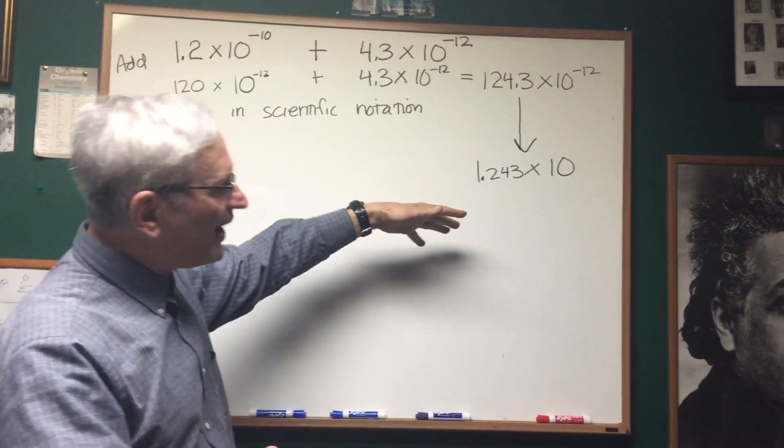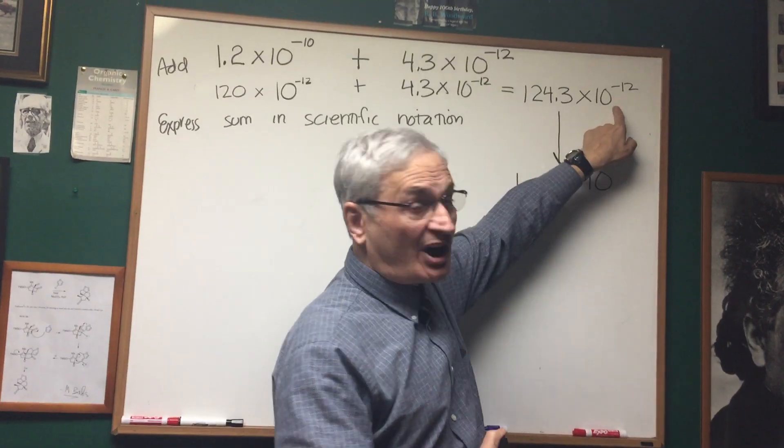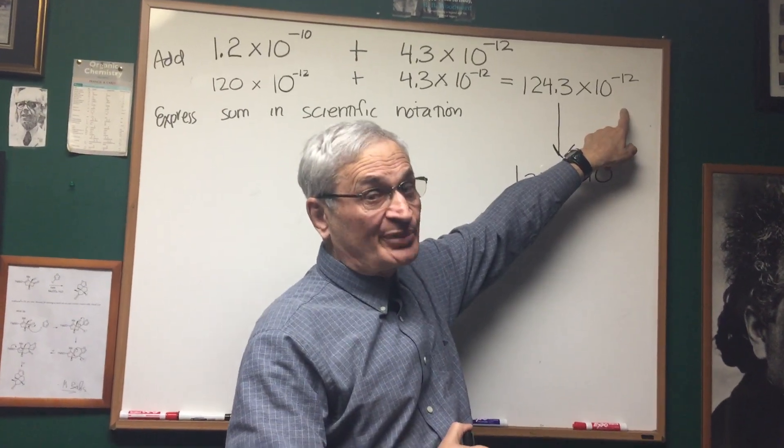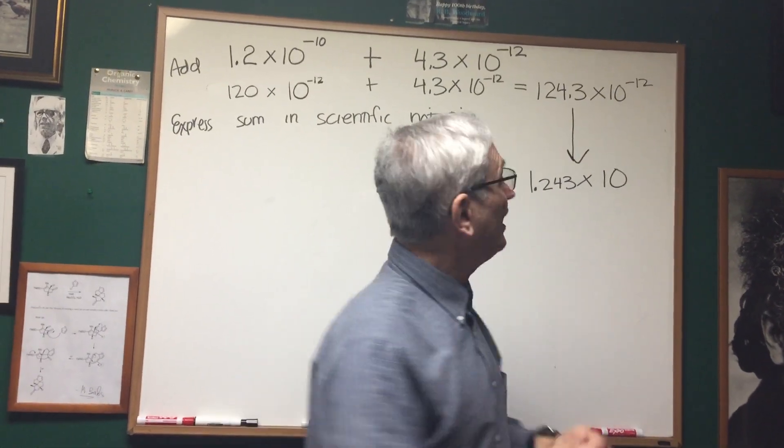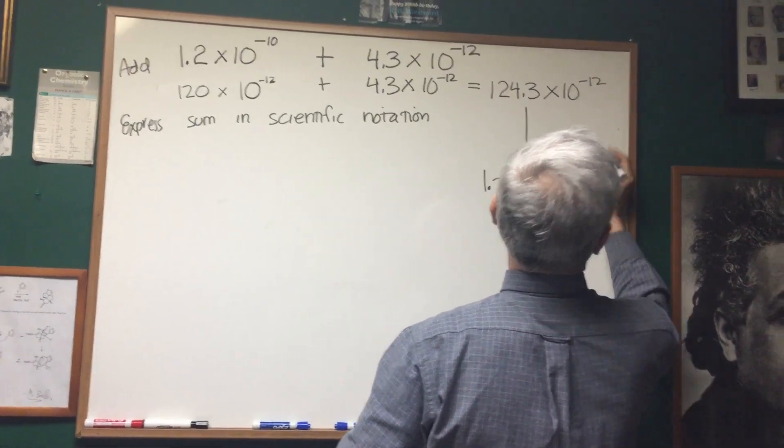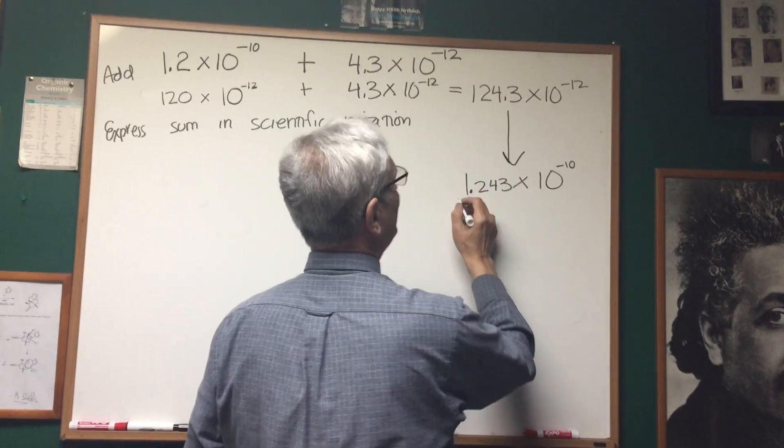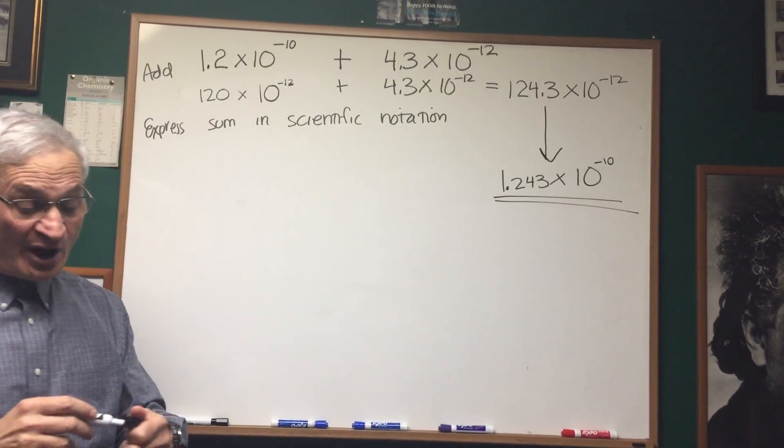Because we divided this portion of the expression by 100, we want to multiply that portion of the expression by 100. 10 to the minus 12 times 100, we're going to add to the exponent. This will become negative 10. Negative 12 plus 2 is negative 10. And here is the answer in scientific notation properly expressed.